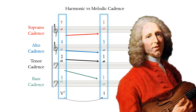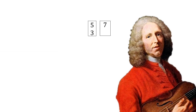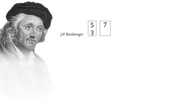Rameau also promoted the idea of thinking about the 7th chord as an independent harmonic unit. If he had made a periodic table of elements for his harmony, it would include only two elements: the triad and the 7th chord. Most other theorists of the time were more reluctant to claim that the 7th chord was an independent harmonic unit. For Johann Philipp Kirnberger, for instance, there was only one element on his periodic table, and it was the consonant triad. All dissonances, even the dominant 7th, needed to have a linear voice leading justification.